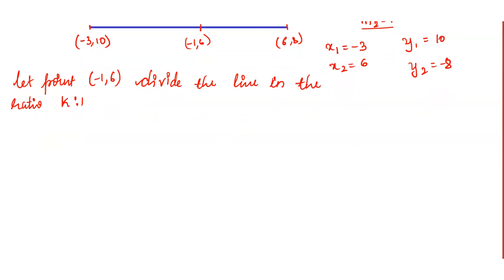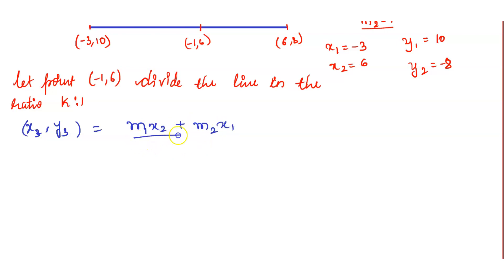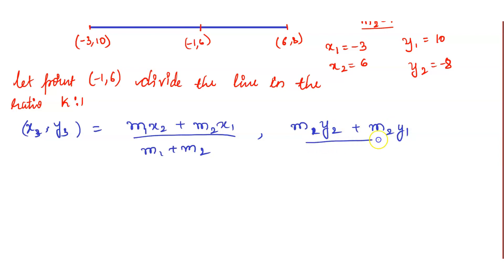Using the section formula, the point (x3, y3) can be written as: x3 = (m1·x2 + m2·x1) / (m1 + m2), and y3 = (m1·y2 + m2·y1) / (m1 + m2).